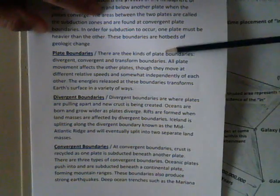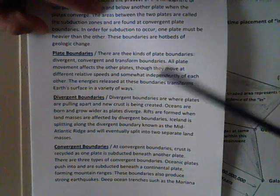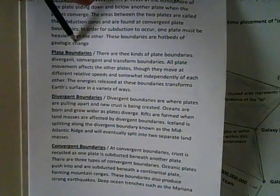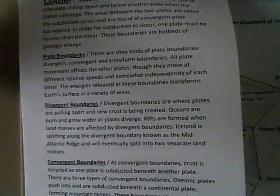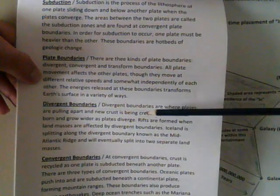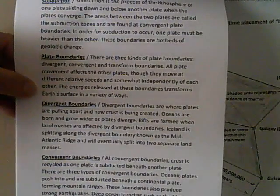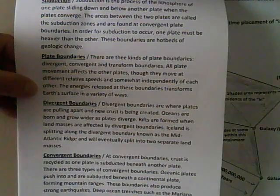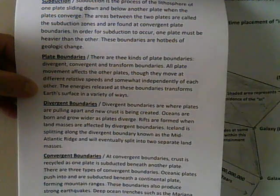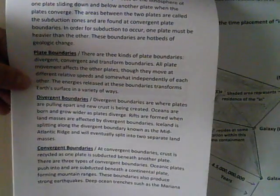There are three kinds of plate boundaries: divergent, convergent, and transform boundaries. All plate movement affects the other plates, though they move at different relative speeds and somewhat independently of each other. The energies released at these boundaries transform Earth's surface in a variety of ways. Divergent boundaries are where plates are pulled apart and new crust is being created — oceans are born and grow wider as plates diverge. Rifts are formed from land masses affected by divergent boundaries. Iceland is splitting along the divergent boundary known as the Mid-Atlantic Ridge and will eventually split into two separate land masses over a very long period of time.